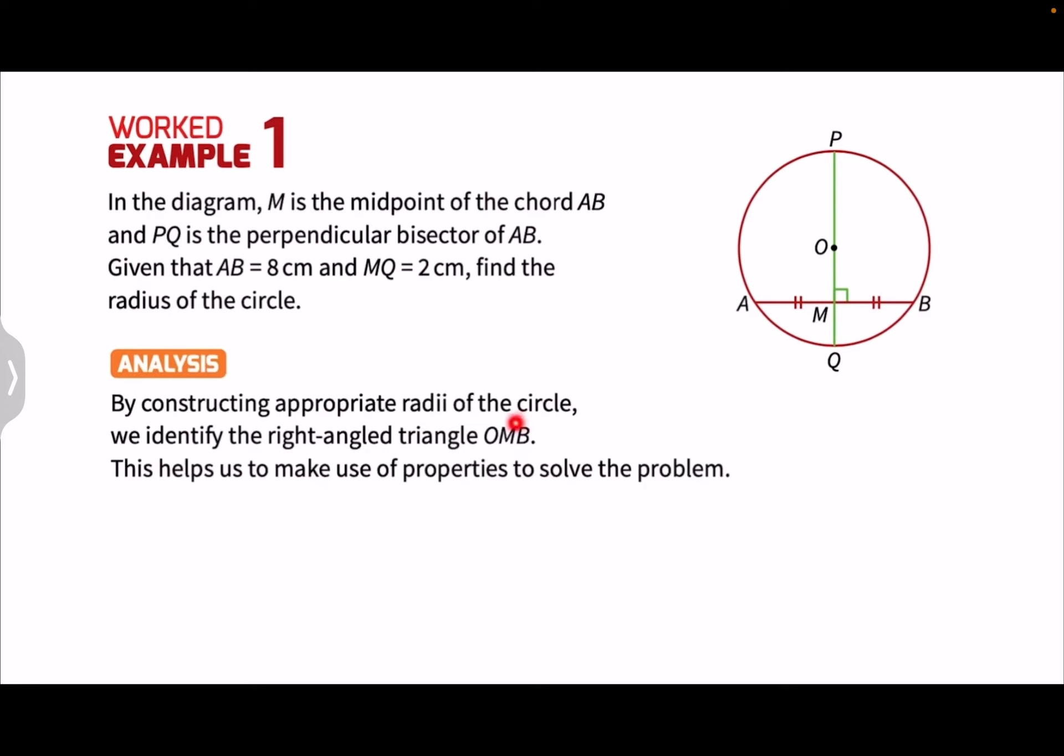By constructing appropriate radii of the circle, we can identify the right angle triangle OMB. So observe that when we connect O to B, we'll form the radius of the circle. And triangle OMB will be a right angle triangle. So this helps us to make use of properties to solve the problem.